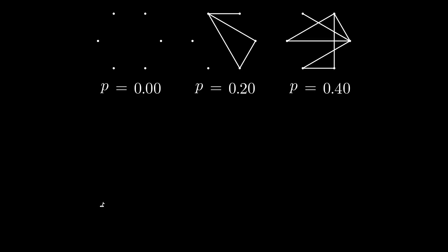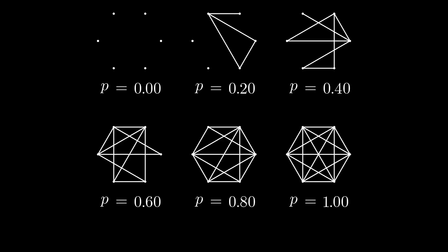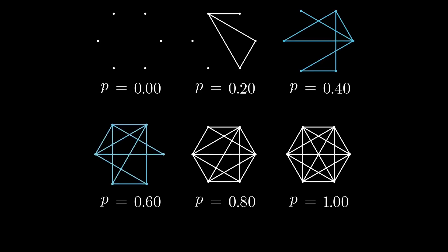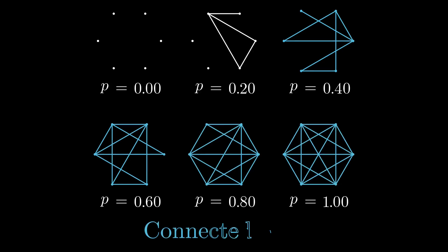To see how these models differ for varying p, let us randomly generate such graphs for a range of values of p. There we go. Okay, of course, for p equals 0, we drew the empty graph, and for p equals 1, we drew the complete graph. Let us now take a look at which of these graphs are, for example, connected. Okay, the first few ones are not, but from p equals 0.4 onwards, we got connected graphs. You should check for yourself that these are actually connected.